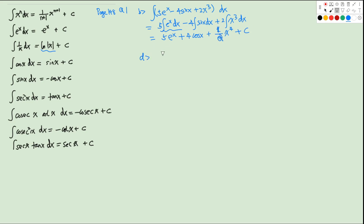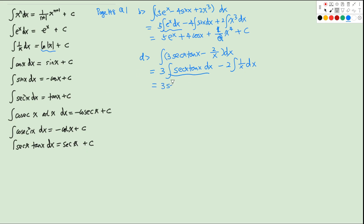For question D, we have the integral of 3secx·tanx − 2/x dx. We can separate this into the integral of secx·tanx dx and minus 2 times the integral of 1/x dx. Using the standard formulas, this gives 3secx minus 2ln|x| plus a constant C.